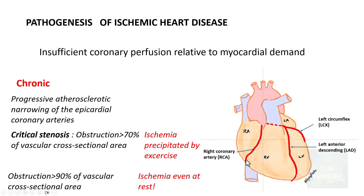Any of these vessels can be involved — one, two, or three vessels. The important vessels involved in coronary artery disease are the left anterior descending coronary artery, which is a branch of the left coronary artery, the left circumflex artery, and the right coronary artery arising from the root of the aorta. The left coronary artery divides into the left circumflex and left anterior descending artery.